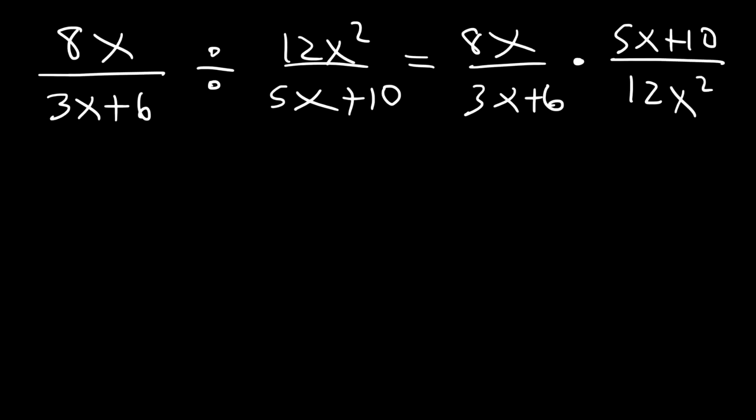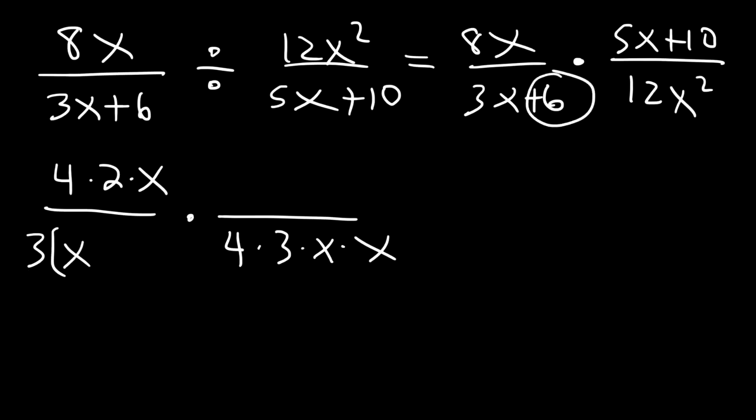Now, how can we simplify the expression that we now have? 8x, I'm going to write it as 4 times 2 times x. And 12x squared, 12, you can break it into 4 and 3. Now, 3x plus 6, we can take out the GCF. We can factor the greatest common factor, which is 3. If you take out a 3, 3x divided by 3 is simply x. And 6 divided by 3 is positive 2. We can also take out a GCF from 5x plus 10. If you take out 5, 5x divided by 5 is x. Positive 10 divided by 5 is 2.